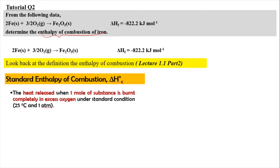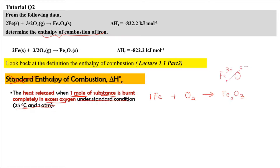The standard enthalpy of combustion means the heat released when one mole of substance is burned completely in excess oxygen under standard conditions. Since we only need the enthalpy of combustion, we focus on the key requirement: only 1 mole of substance is burned in excess oxygen to produce Fe₂O₃. So we need 1 mole of Fe burned in excess oxygen to produce Fe₂O₃, which comes from Fe³⁺ and O²⁻. Now we have to balance the equation.